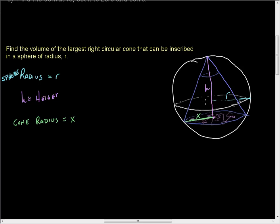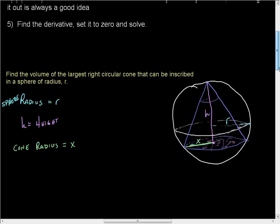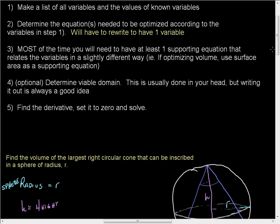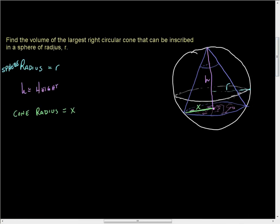So now we need some way to, well let's go ahead, tell you what, let's just go ahead right now and see what we need. We have radius r. But let's go ahead and do step two. Step two says determine the equations needed to be optimized according to the variables. Okay, well now I have three variables. If I just take a look at the cone itself, then I look at the volume of the cone. It's equal to one third, the kind with a three on the bottom, the area of the base, which is π x², times the height.